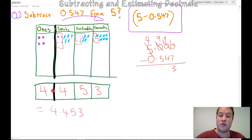So ten take away seven is three. Nine take away four is five. Nine take away five is four. Don't forget your decimal. Four take away nothing is still four. So my answer is 4.453. It's the same answer. So that would be how I do it. Vertical method.